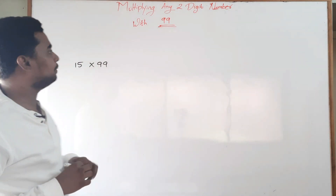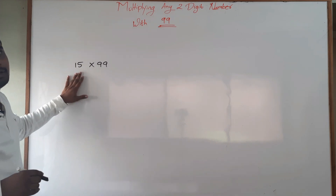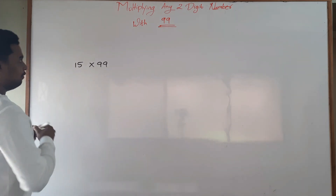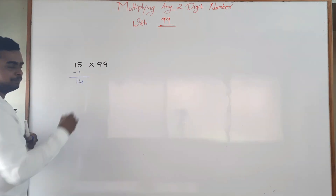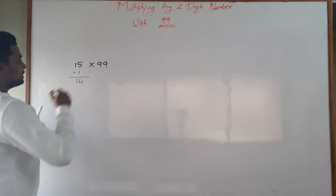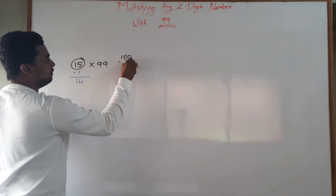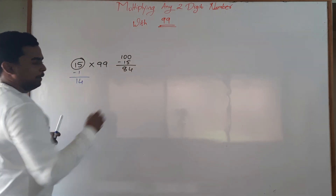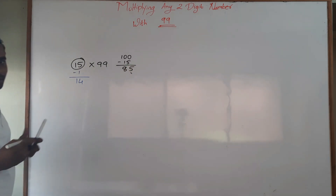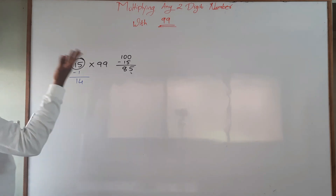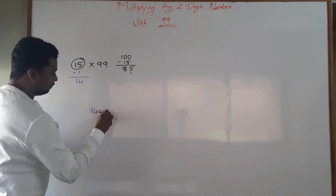How do we multiply this two-digit number with 99? First, I will subtract 1 from 15, so I will get 14. Next, I will subtract 15 from 100, so 100 minus 15 will give me 85. So multiplying 15 by 99 will give me 1485.